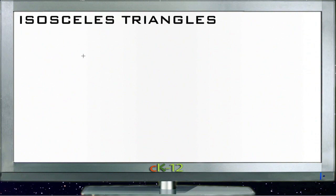Alright, let's talk about isosceles triangles. Isosceles triangles are triangles that have at least two sides that are the same. If you have a triangle that has two sides of the same, it is considered isosceles.